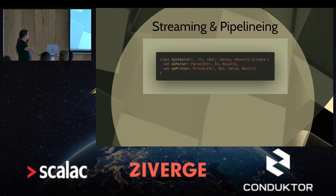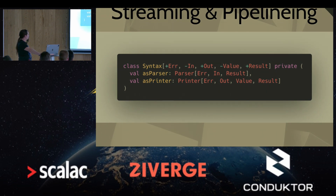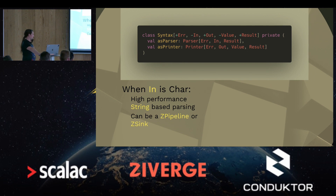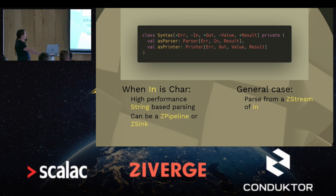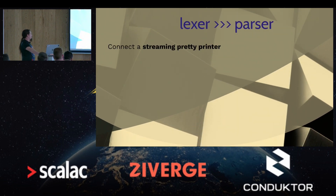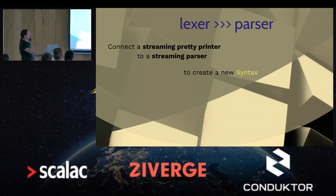Regarding streaming and pipelining: if we look at the type again, and especially the input type parameter — if that is a character, we can have a high-performance string-based parser. We can also use it as part of a ZStream as a pipeline if we want to repeat the parser multiple times, or as a sink if we just want to parse the input and provide an output. If it's not a character, we can still use it in a stream — we can have a ZStream of the input type and run the parser on that. We can also imagine that by connecting a streaming pretty printer to a streaming parser, we can create new syntaxes, plugging together these different syntax values.